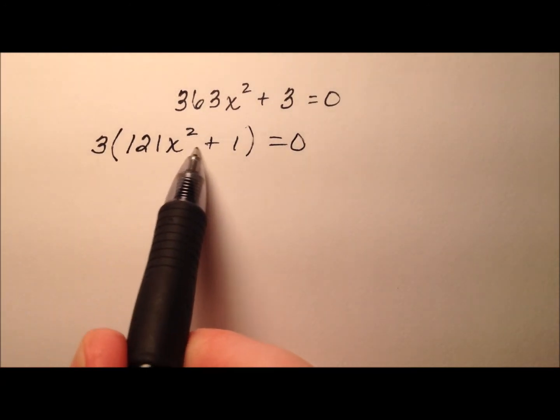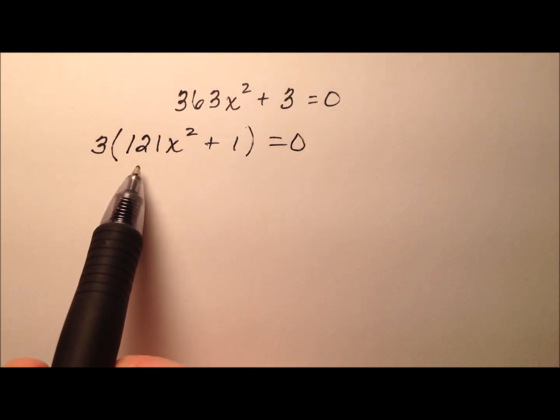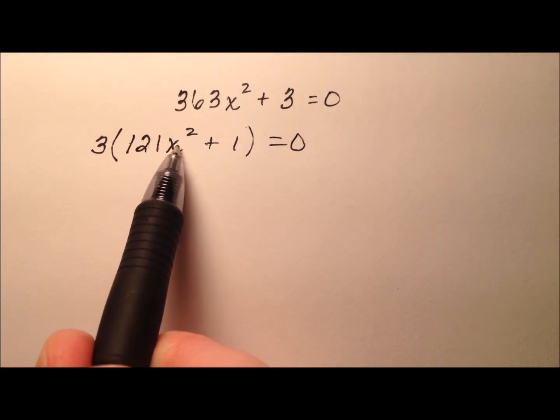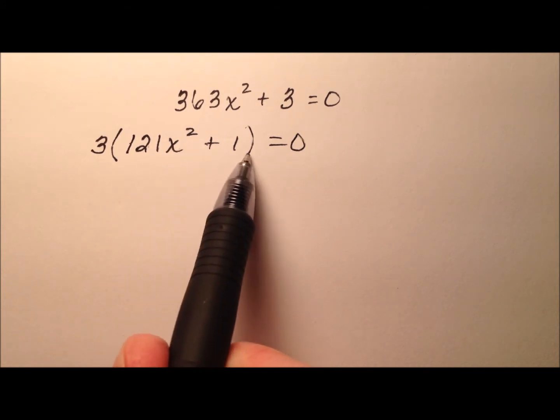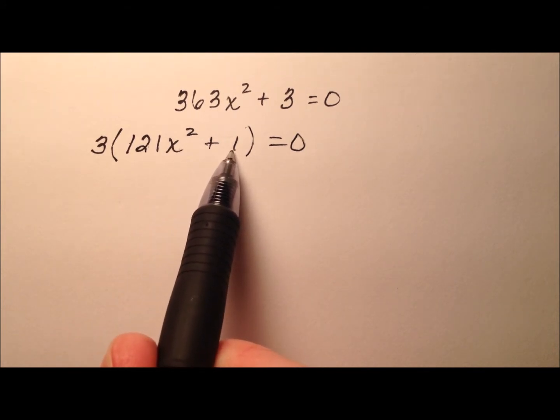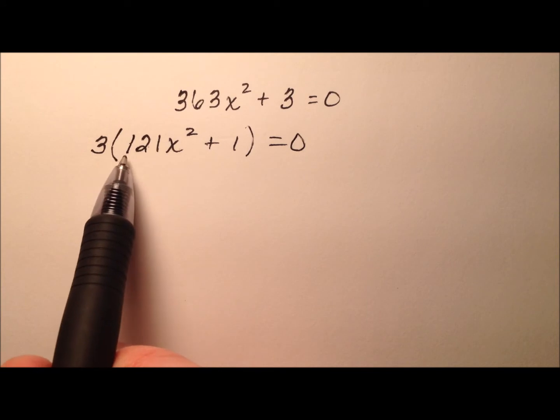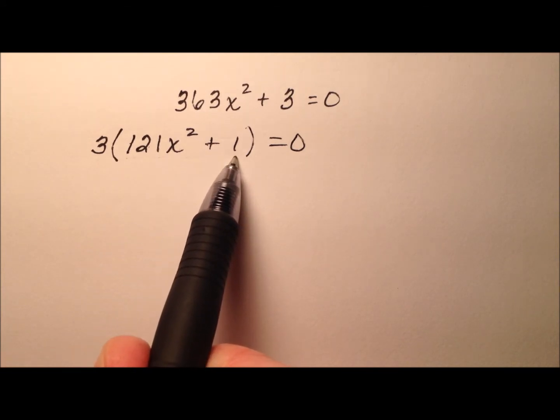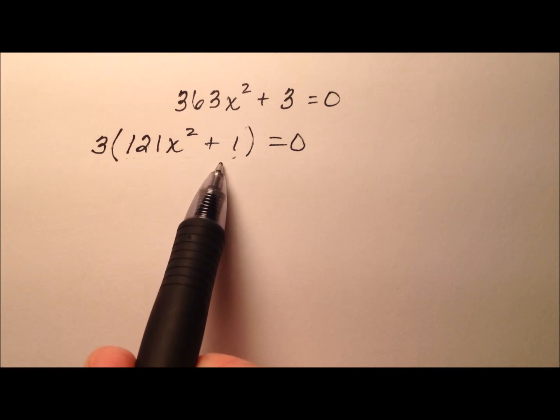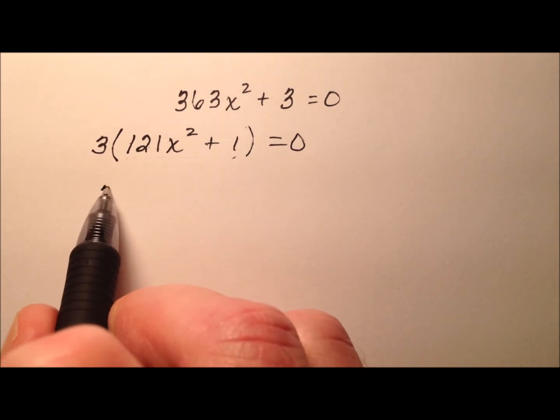Okay, so this binomial I have left over on the inside appears to be the sum of two perfect squares, because 121x squared is a perfect square, and 1 is a perfect square. So let's go ahead and factor this down as the sum of two squares, and I know that that factorization is going to use complex numbers, so I'll have an i inside here.